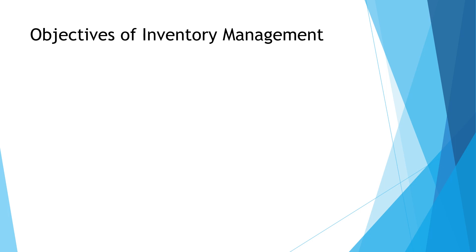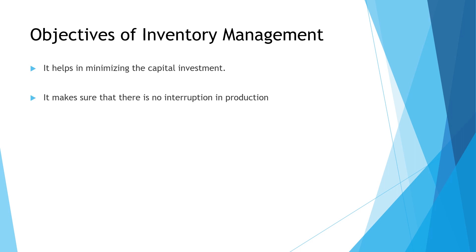Moving on, what are the objectives of inventory management? The first objective is minimizing capital investment. In inventory management, we basically decide the amount of material to be stored, when it is to be bought, and when it is to be used in manufacturing. This helps in minimizing capital investment because if you know the proper amount of material to be bought, you're not spending excess money — excess stock locks up capital that could be used elsewhere.